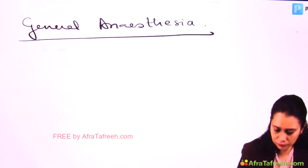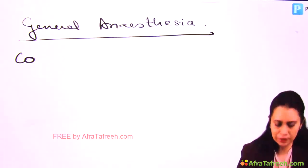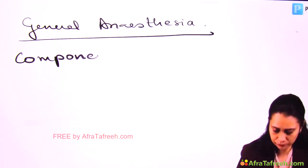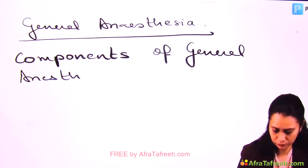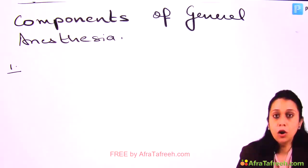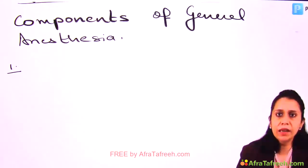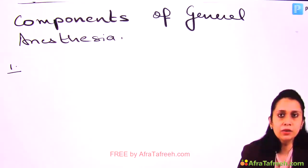So, what are the components of General Anesthesia — what exactly do we provide under General Anesthesia? Number one: Loss of Consciousness. We always make our patient unconscious. Loss of Consciousness is a must during General Anesthesia, but loss of Consciousness is not required in Regional Anesthesia.